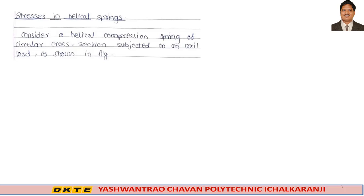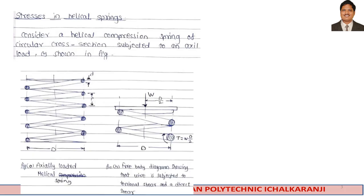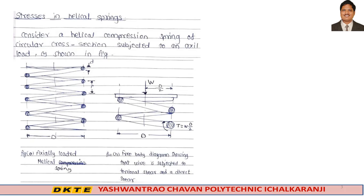Stresses in helical spring. Consider a helical compression spring of circular cross-section subjected to an axial load as shown in figure. We have a helical compression spring with a circular cross-section and axial load W applied, with mean diameter D. The figure shows an axially loaded helical spring with a free body diagram showing that the wire is subjected to torsional shear and direct shear.